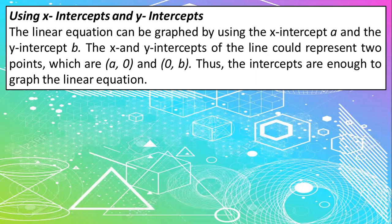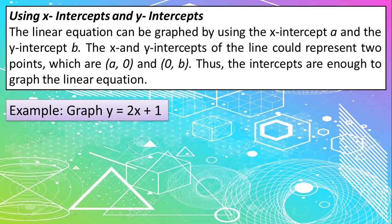Meaning to say, we can let the value of y be equal to 0 or x be equal to 0. So the intercepts are enough to graph the linear equation. So for our example, once again, we will use y is equal to 2x plus 1.